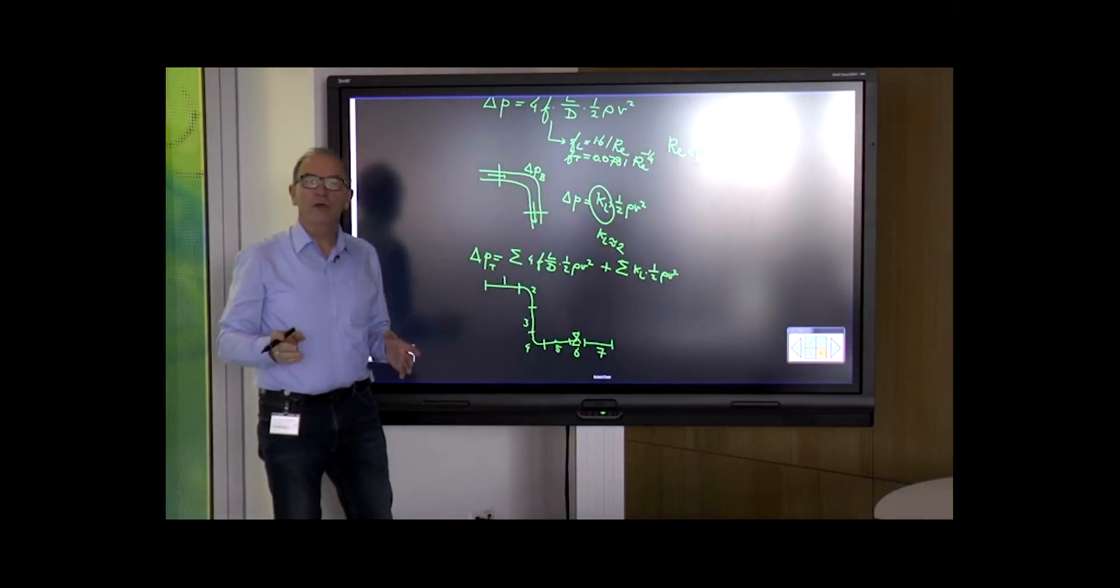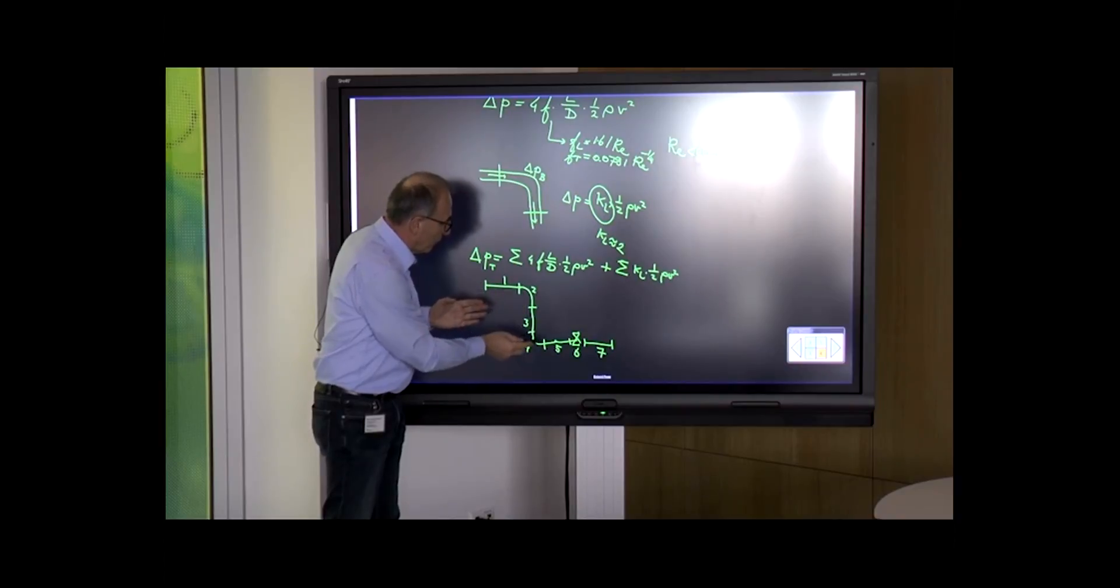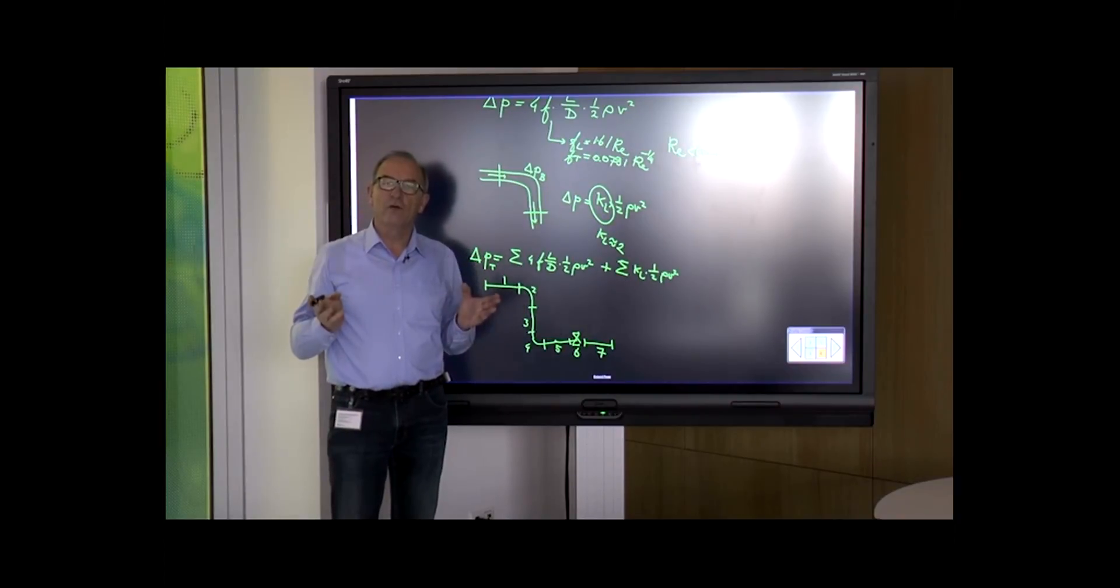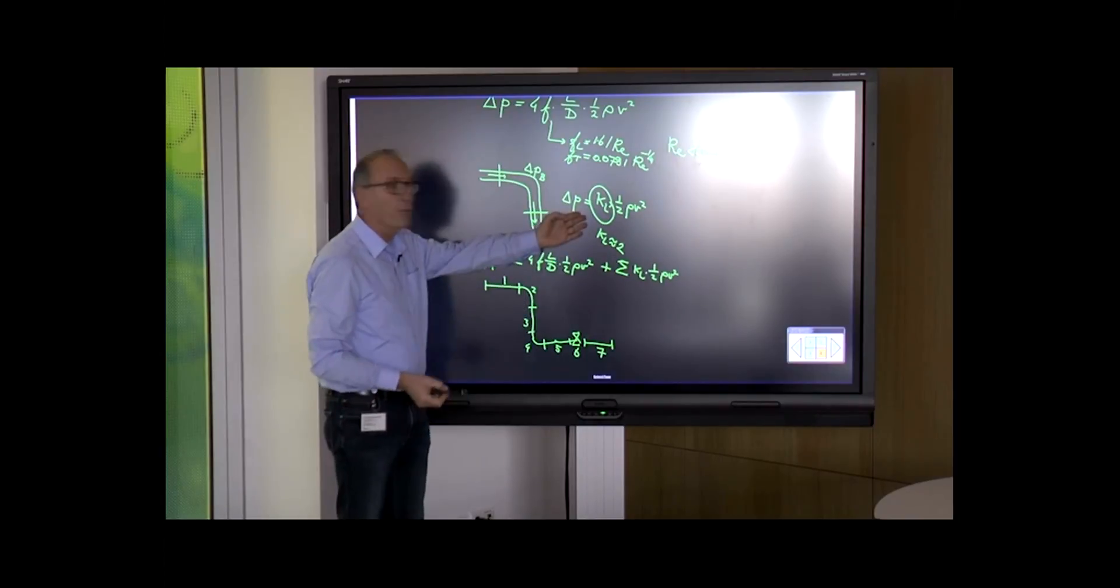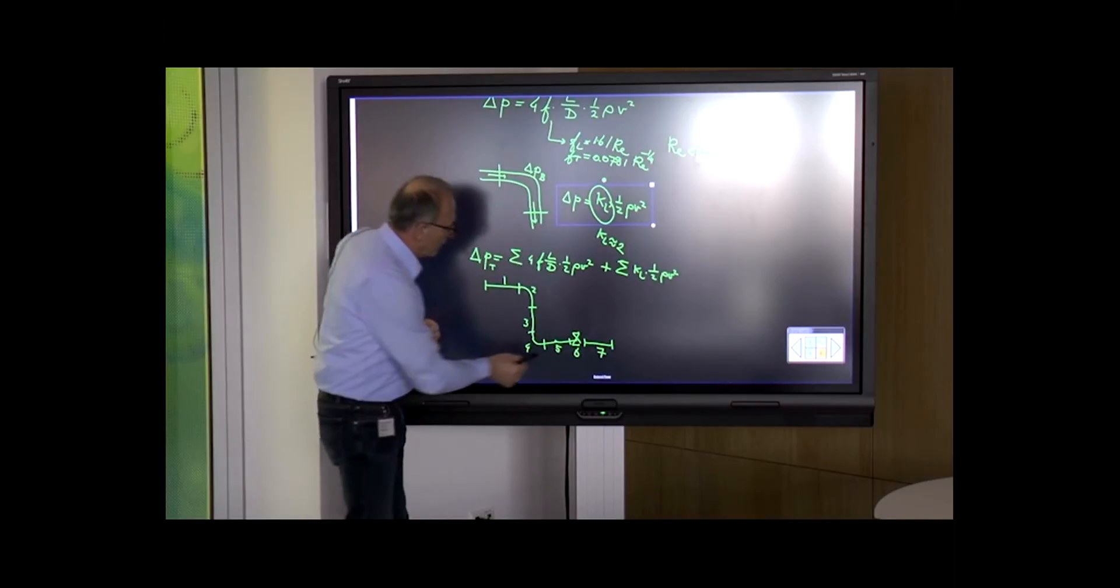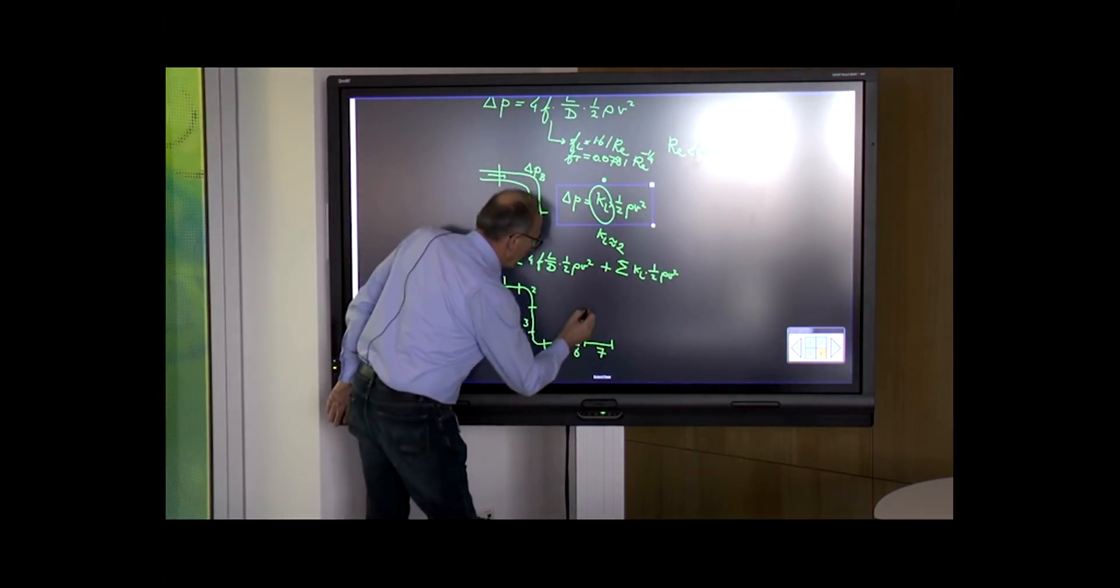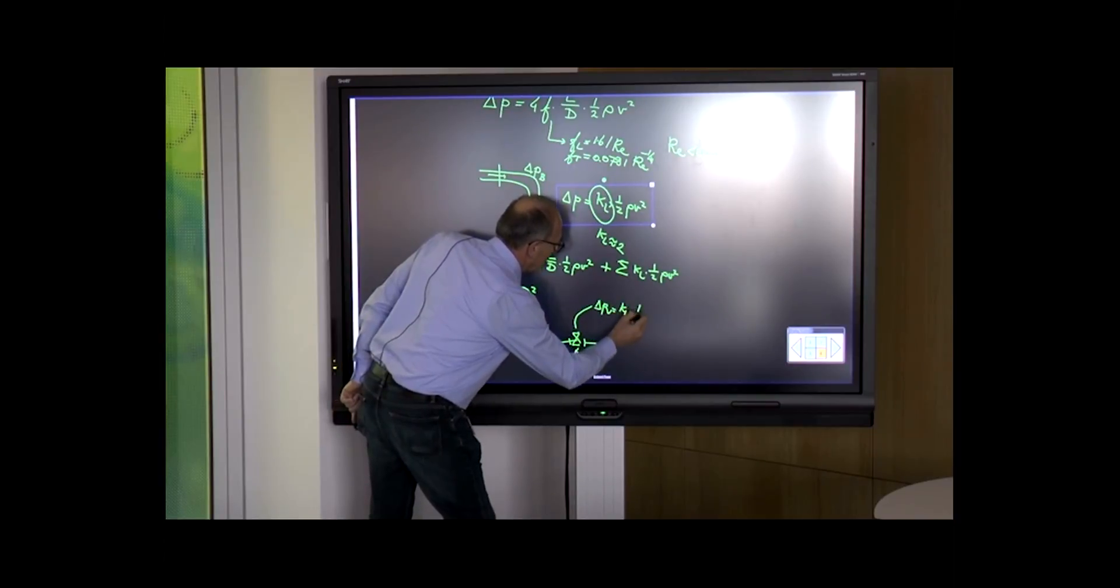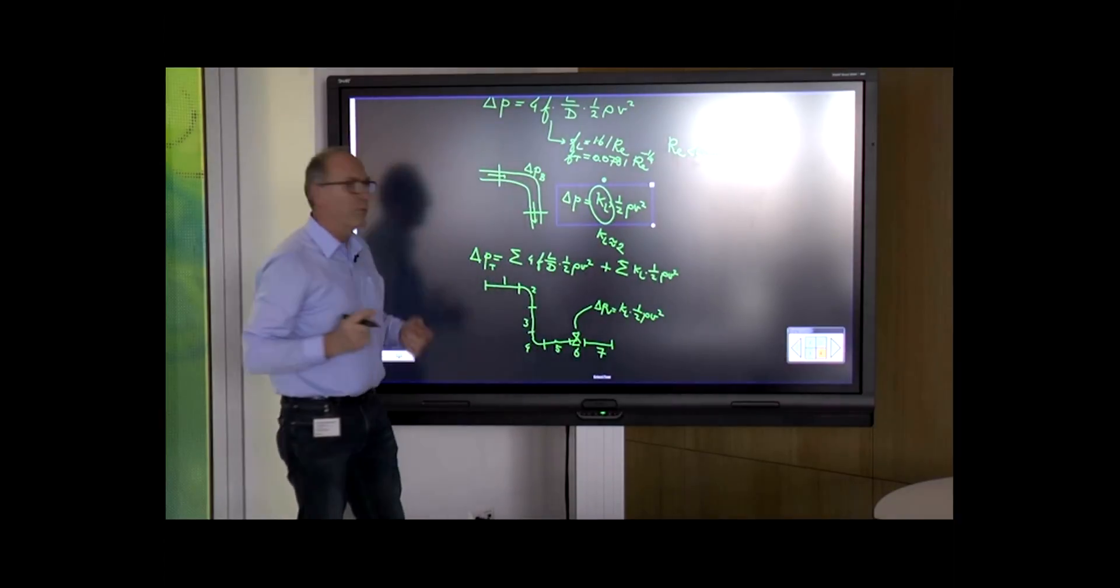First, we calculate the straight pipes: 1, 3, 5, and 7. We calculate this with the Fanning formula. We calculate the bends 2 and 4 by a similar formula. We calculate the friction loss over valve 6 using the formula: delta P valve equals KL multiplied by one-half rho velocity squared.